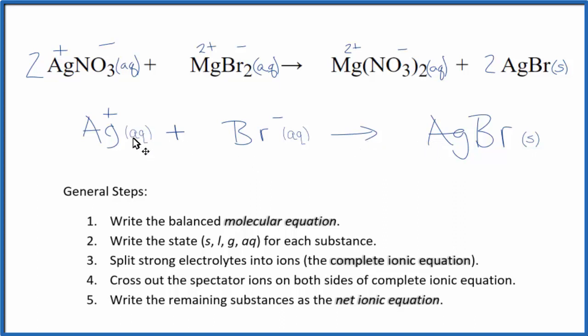You'll also notice that the charges balance out. We have a positive and a negative here. They cancel out. This is a neutral compound. And we have one silver atom, one silver atom, one bromine, one bromine. So that's how you know that you've really balanced this correctly.